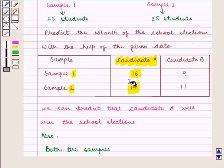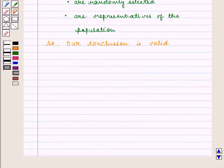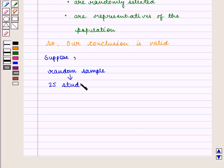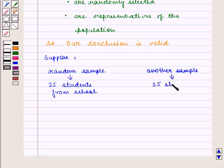Now suppose if we take a random sample of 25 students from school and if we take another sample of 25 students who are classmates of candidate B.